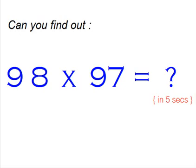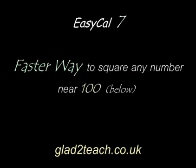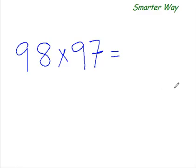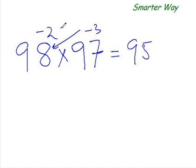The smarter way of multiplying 98 times 97 would be... watch me. That's your answer. Was it too fast for you to follow? So let me give you a very slow motion action replay of what I have just done.